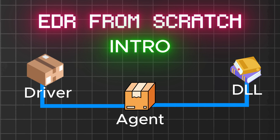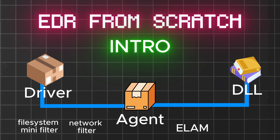Depending on the traction this series gets, we may also explore further and build a file system mini filter, a network filter, and we can look at ELAM — which is Early Launch Anti-Malware — and ETW, which is Event Tracing for Windows. I hope you guys are excited.